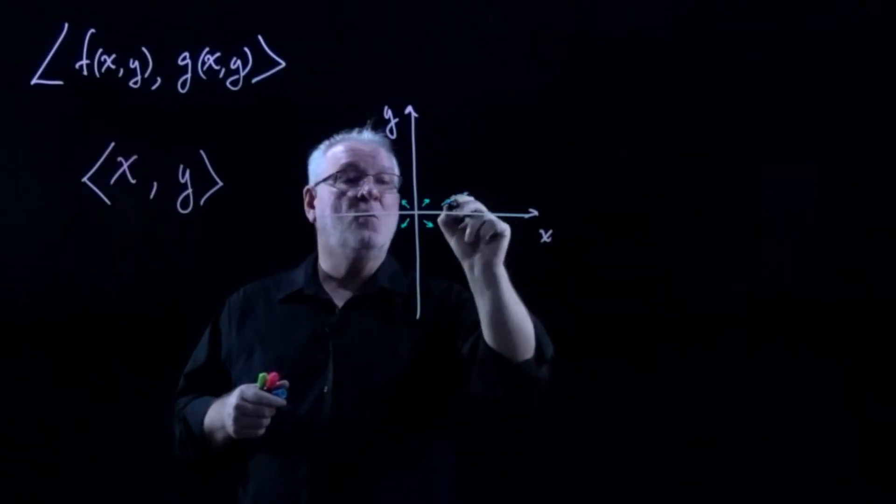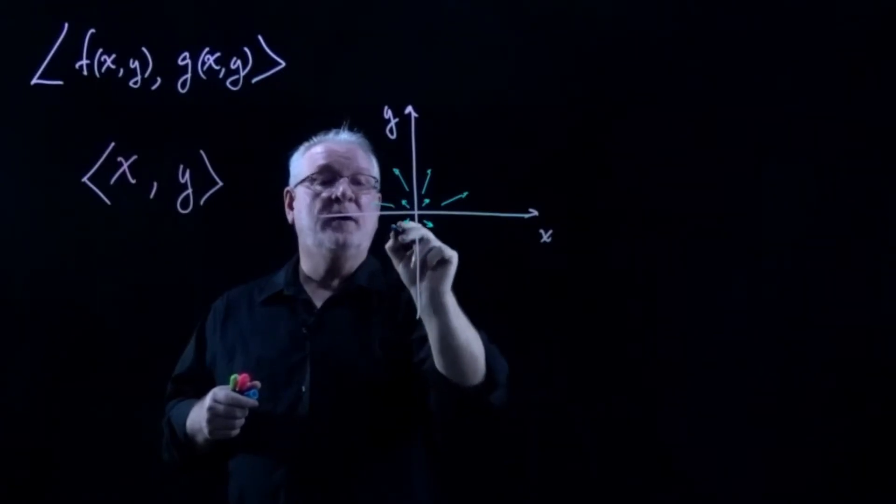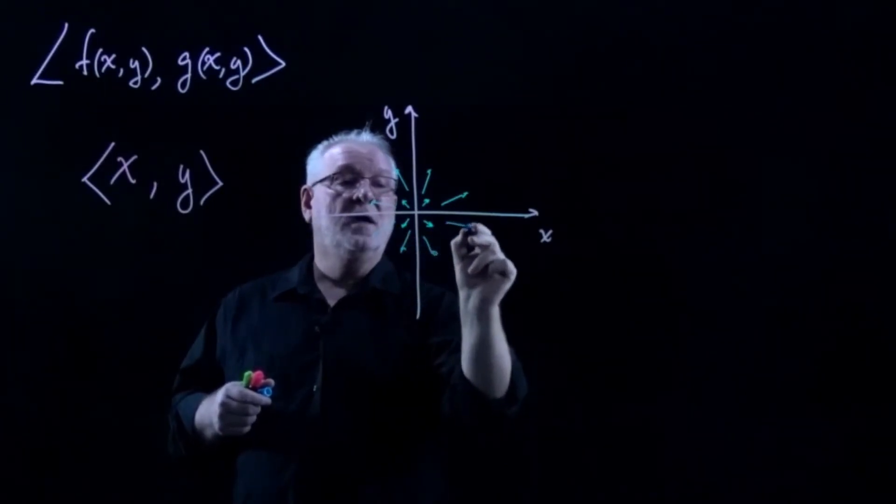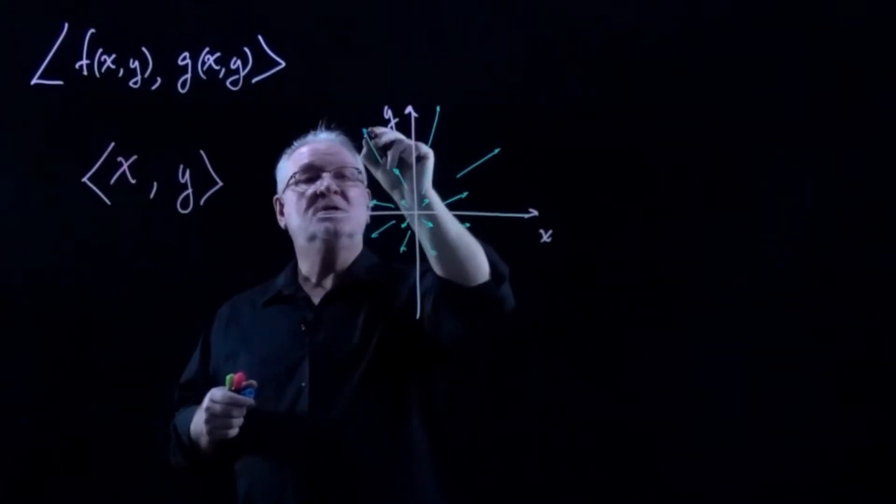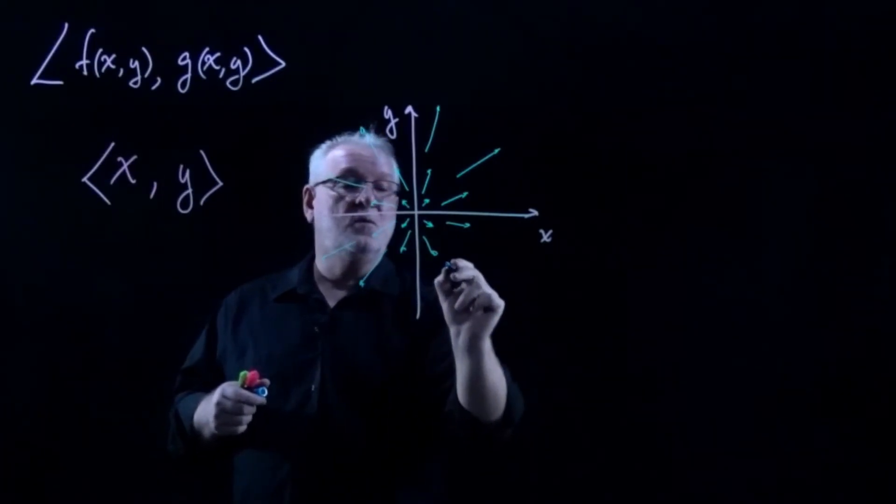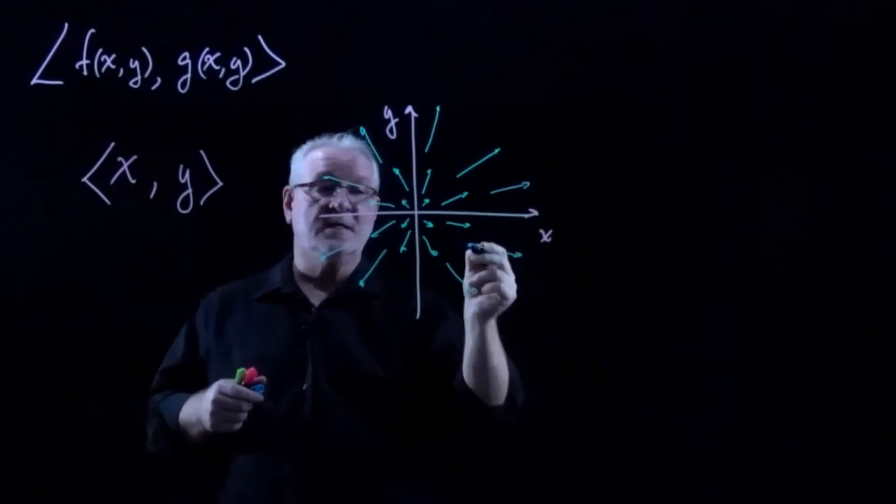So as we move further away, the vectors will increase in size, but will always point radially from the origin outward. And so it's pretty easy to construct this vector field just by picking a few key locations and drawing vectors that are roughly equivalent to the magnitudes we would expect at these various radiuses.